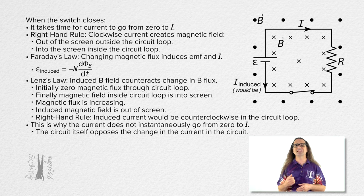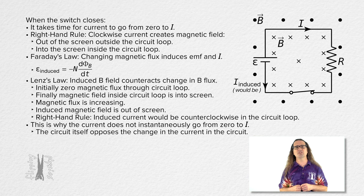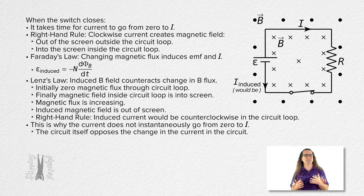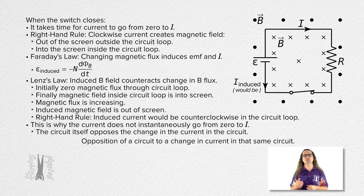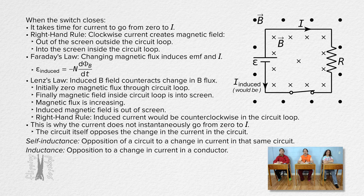Exactly. Closing the switch causes a change in the magnetic flux in the circuit loop. That changing magnetic flux induces an EMF in the circuit which is opposite the direction of the electric potential difference across the battery. And the induced current which would be caused by this change in magnetic flux would be opposite in direction to the current caused by the battery. The effect of this is that it slows down the change in the current from zero to I. This opposition of a circuit to a change in current in that same circuit is called self-inductance. The more general concept of the opposition to a change in current in a conductor is called inductance.